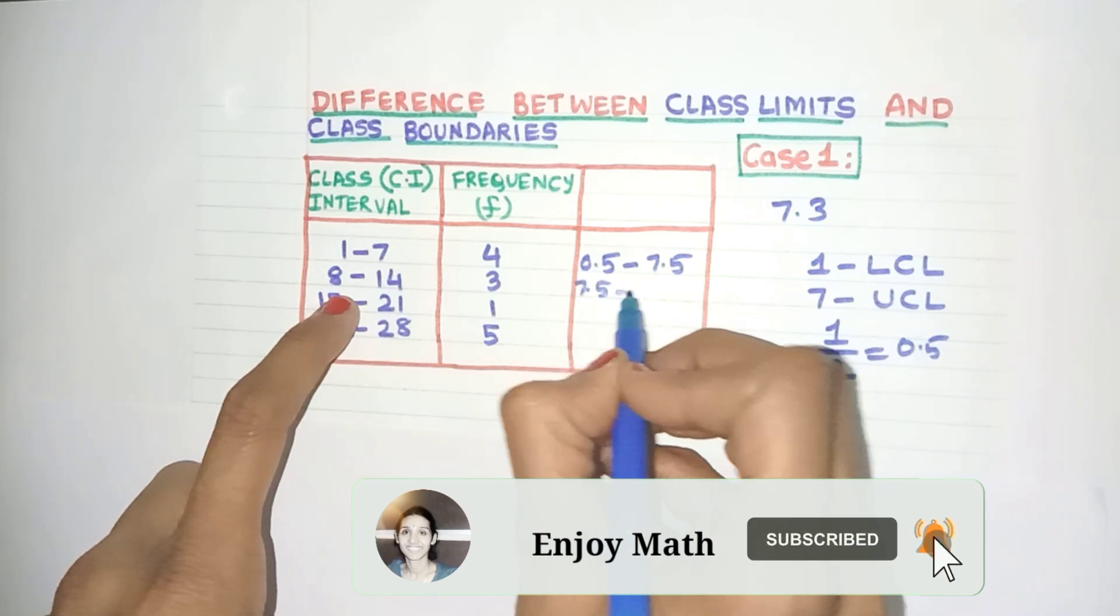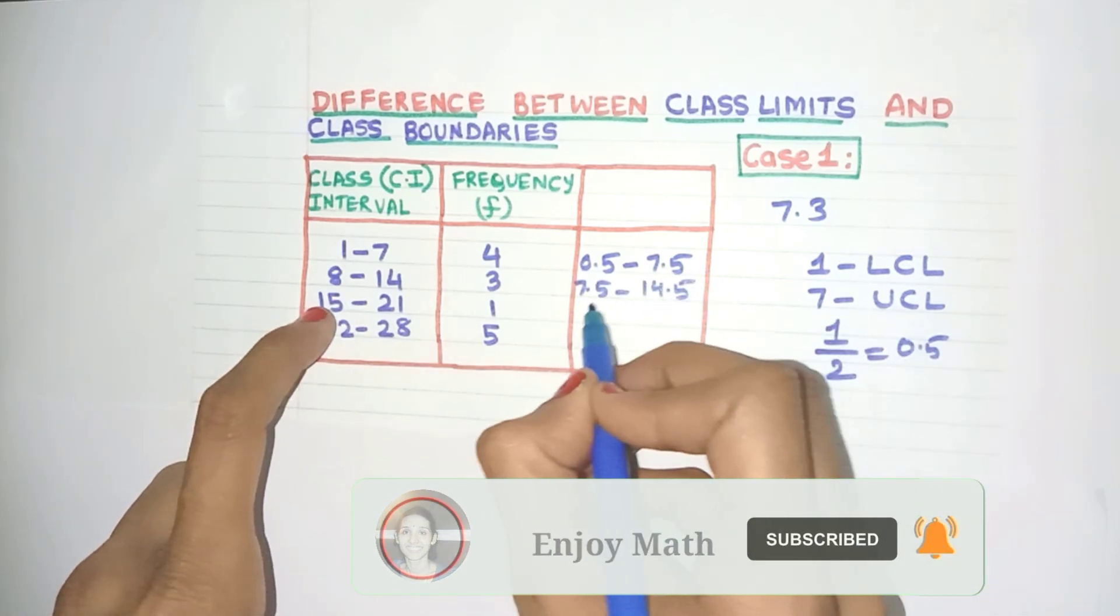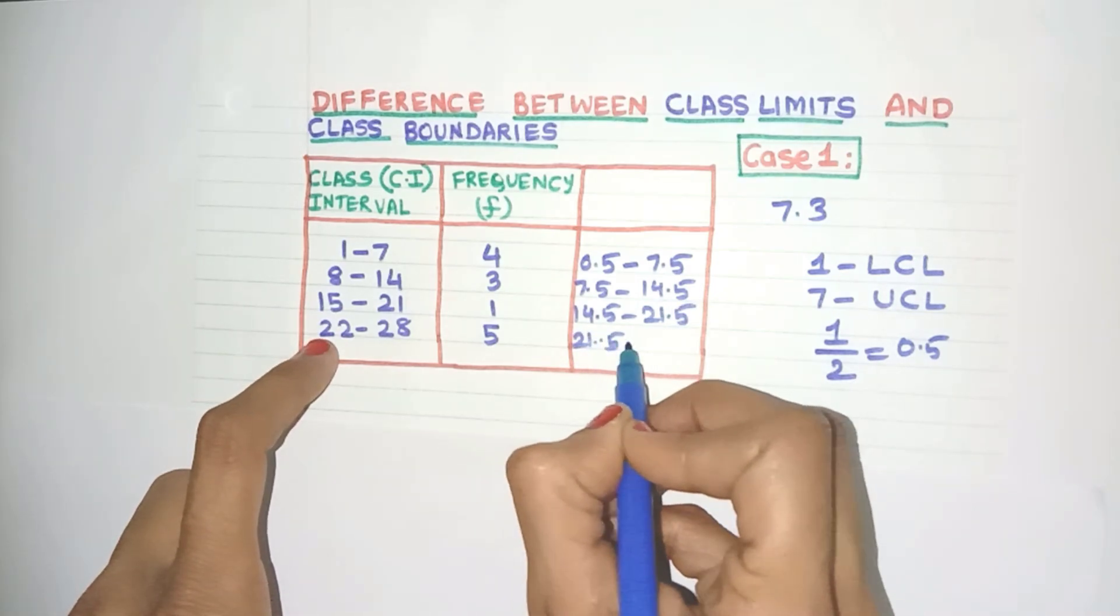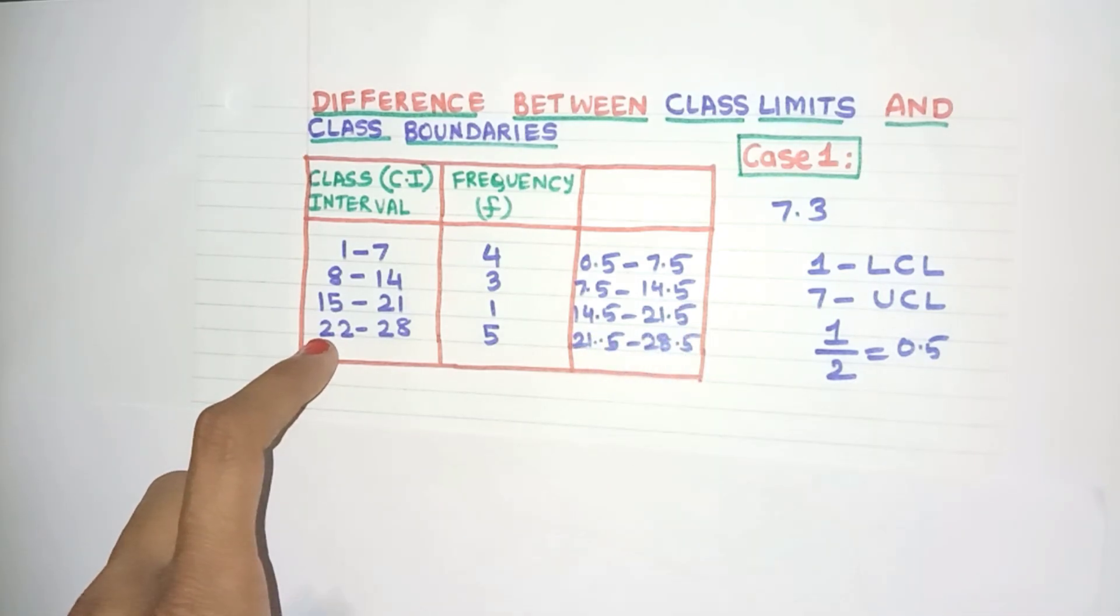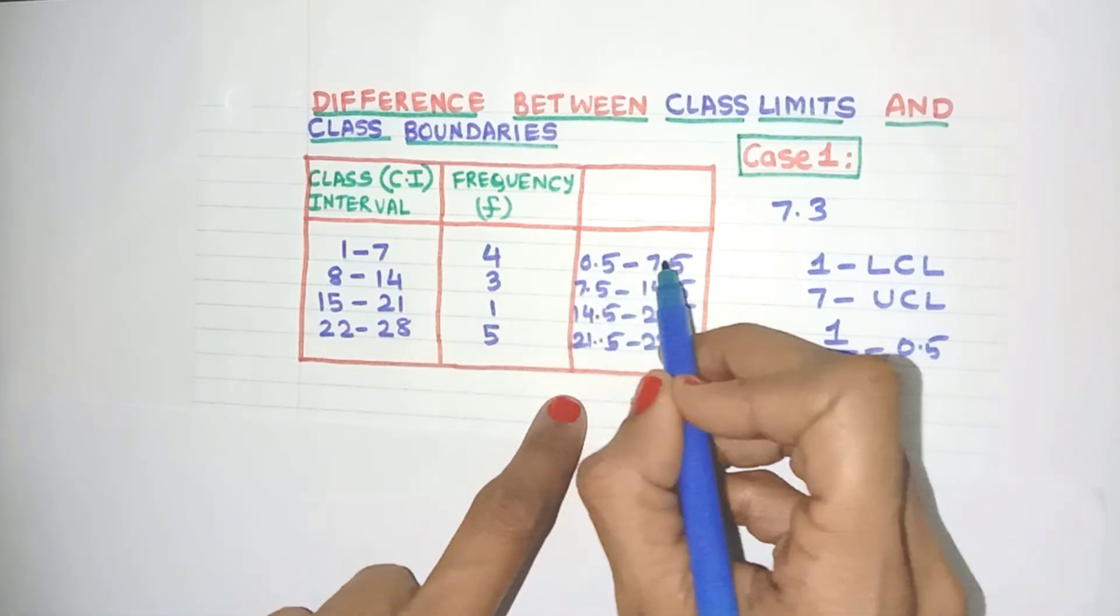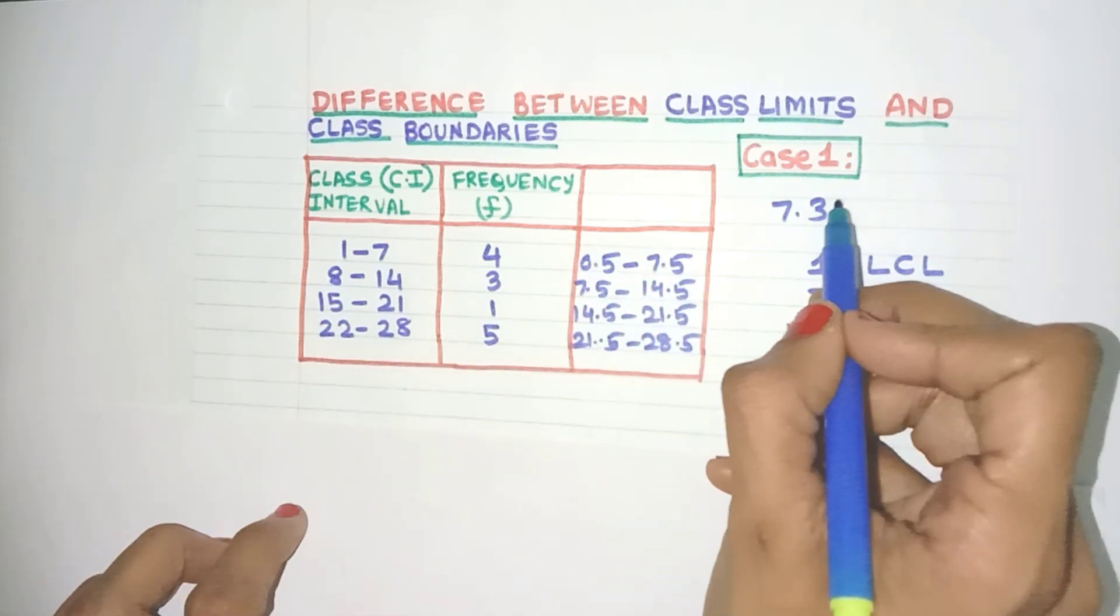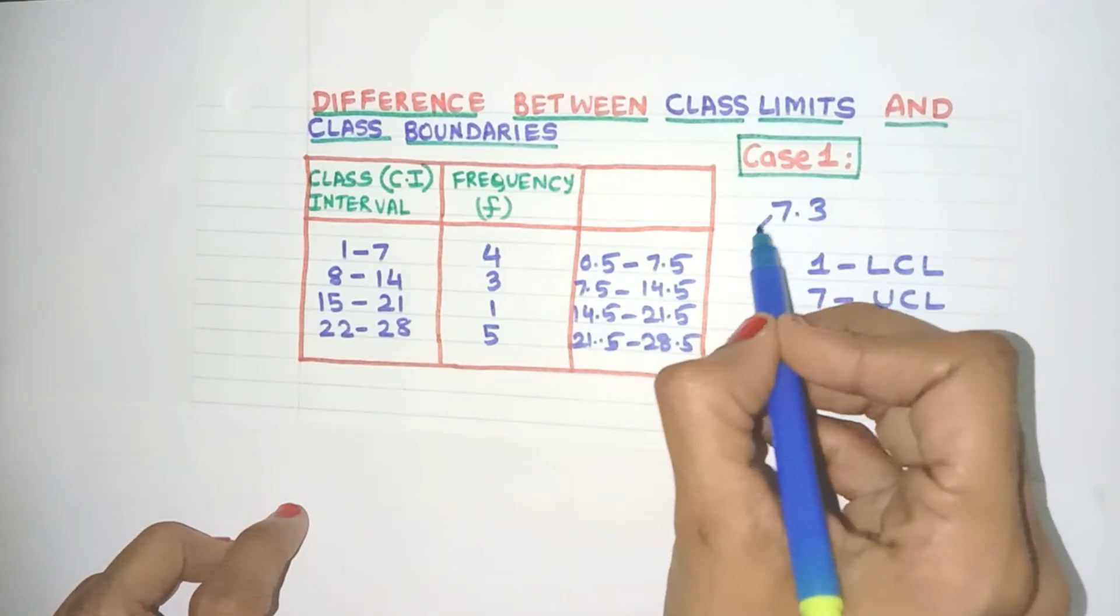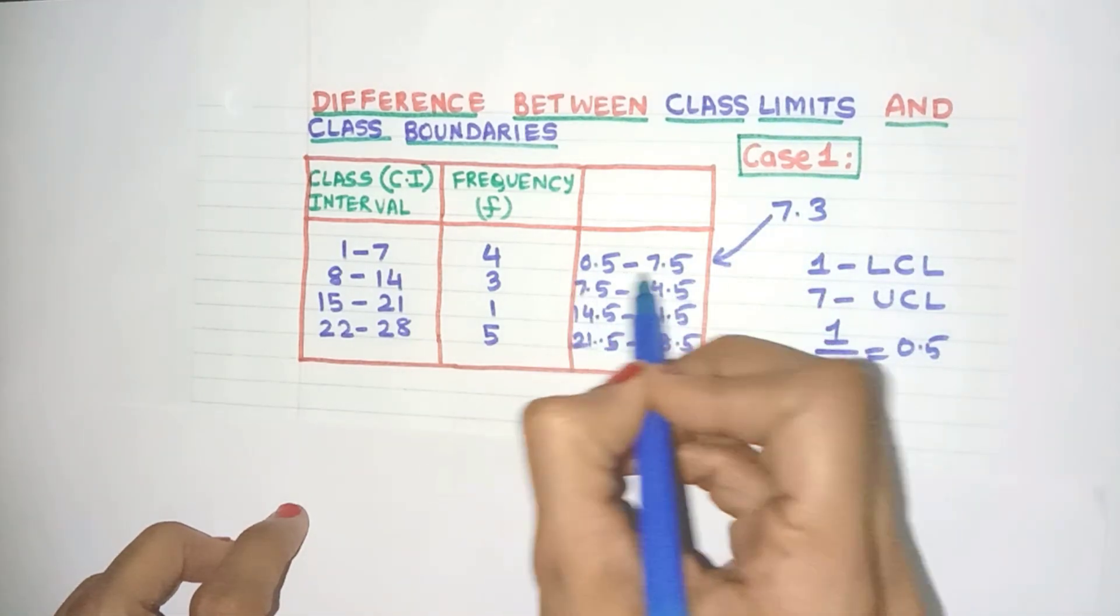Here I'll get 7.5 to 14.5. Yes. Here I'll get 14.5, 21.5, 21.5 to 28.5. Now is there any gap between the upper class limit and the lower class limit? Not at all. So where will I put the 7.3? Yes. Very confidently we can say that it will go to this class interval.